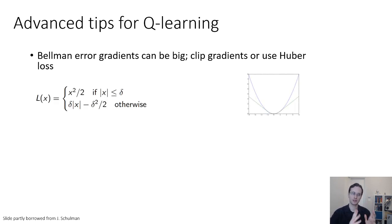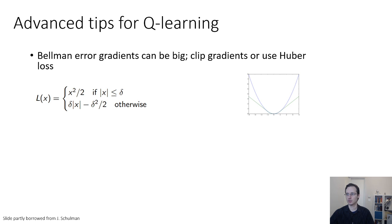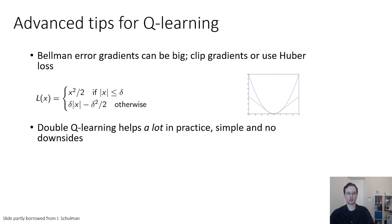What you can do is clip your gradients, or use what's called a Huber loss. A Huber loss interpolates between a squared error loss and an absolute value loss. Far away from the minimum, it looks like absolute value; close to the minimum, it flattens out with a quadratic. The green curve shows a Huber loss, the blue curve shows a quadratic loss. The Huber loss mechanically behaves very similarly to clipping gradients but can be a little easier to implement. Double Q-learning helps a lot in practice, is very simple to implement, and basically has no downsides.